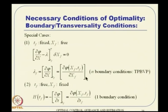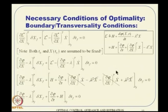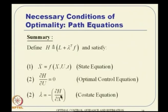When both t_f and x_f are free, both conditions are necessary. Note that del-phi/del-x gives n boundary conditions — matching the n-dimensional costate equation. So we have a complete set: the differential equations, algebraic equations, and boundary conditions must all be satisfied simultaneously for a meaningful optimal solution.